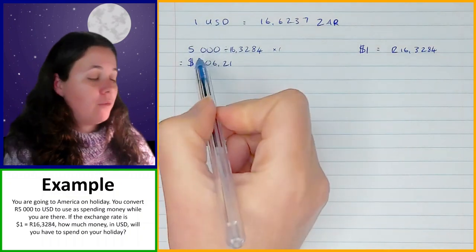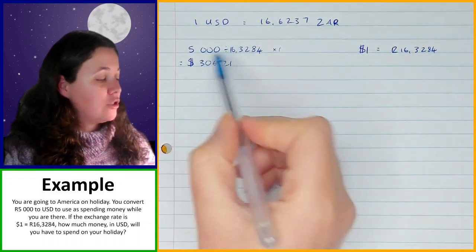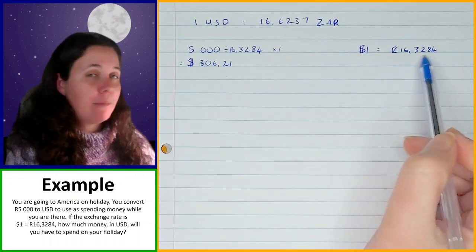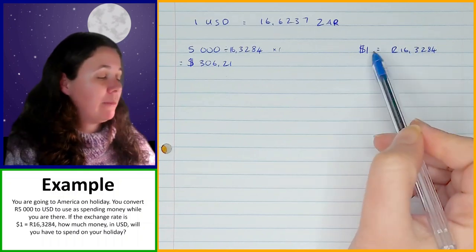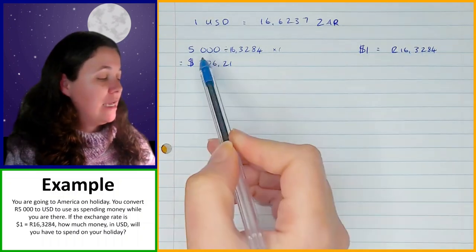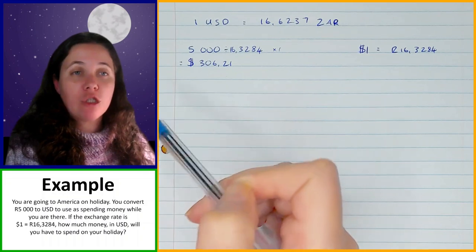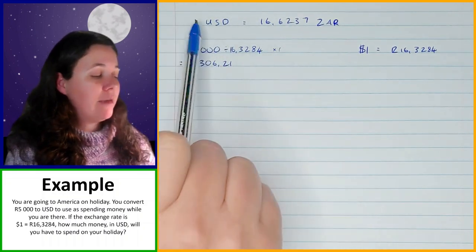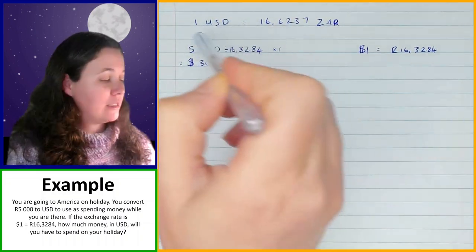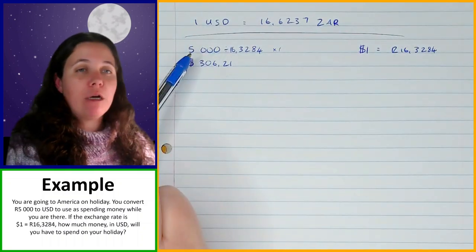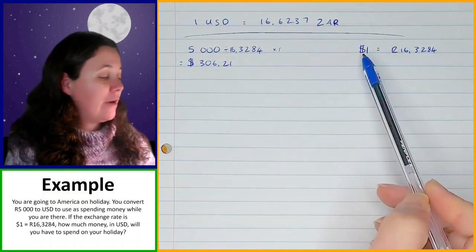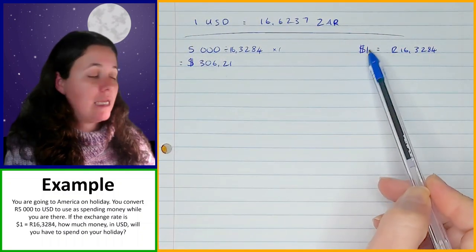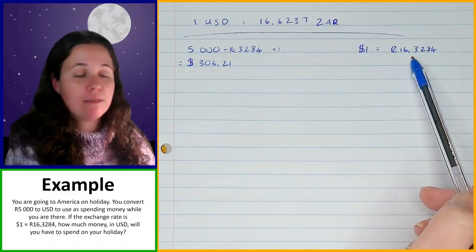So if you're converting from rands to dollars, you divide by the rands amount in the exchange rate and multiply by the dollars amount. And that will help you to work out how much dollars it is. If you had been given the amount in dollars, this is a separate thing over here. If you've been given the amount in dollars, then you would be dividing by the amount in dollars and multiplying by the amount in rands.